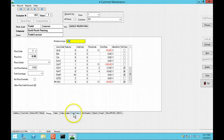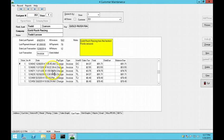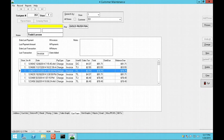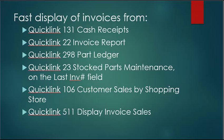Also in Customer Maintenance, we have made it quicker to display an old invoice. Go to the Customer Transactions tab and double-click on an invoice to display it. This feature also works in QuickLink 131 Cash Receipts, QuickLink 22 Invoice Report, QuickLink 298 Part Ledger, QuickLink 23 Stocked Parts Maintenance on the Last Invoice Number field, QuickLink 106 Customer Sales by Shopping Store, the Ultimate Drill Down Program, and QuickLink 511 Display Invoice Sales.